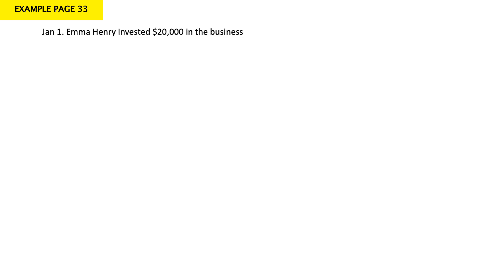Emma Henry, the owner of Clean Me Up shop, just opened her business in January. During the month of January 2015, the following events occurred. January 1: Emma Henry invested $20,000 in the business. When we invest money in the business, cash will increase and capital will increase. So I should debit my cash and credit my capital with $20,000.